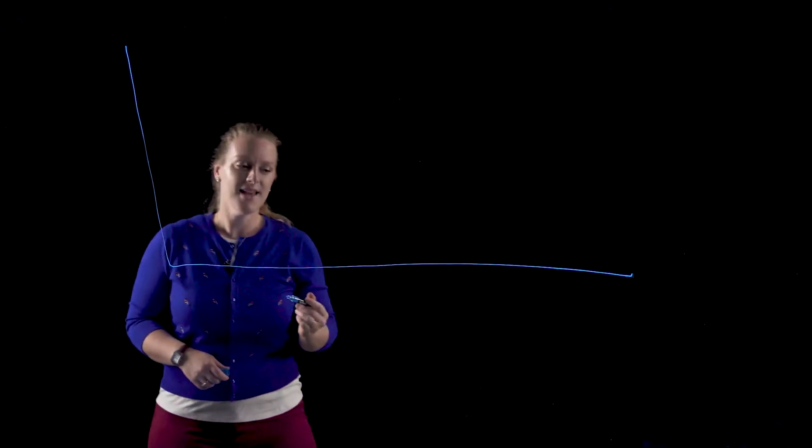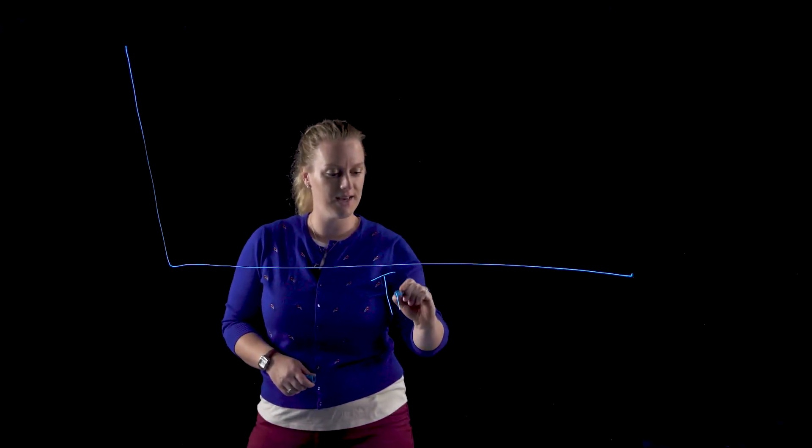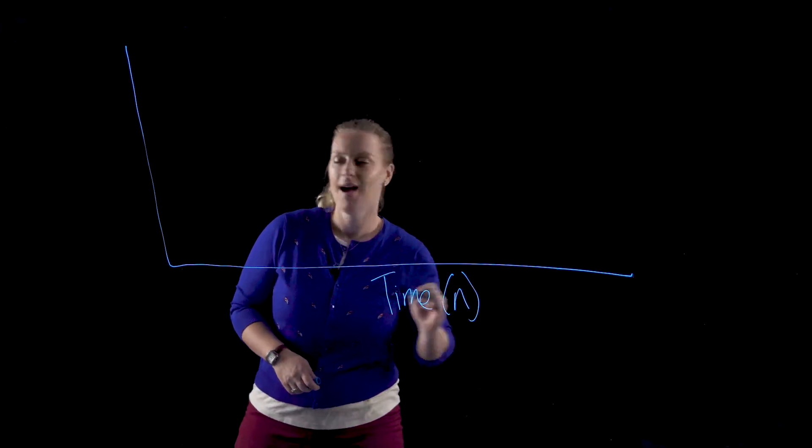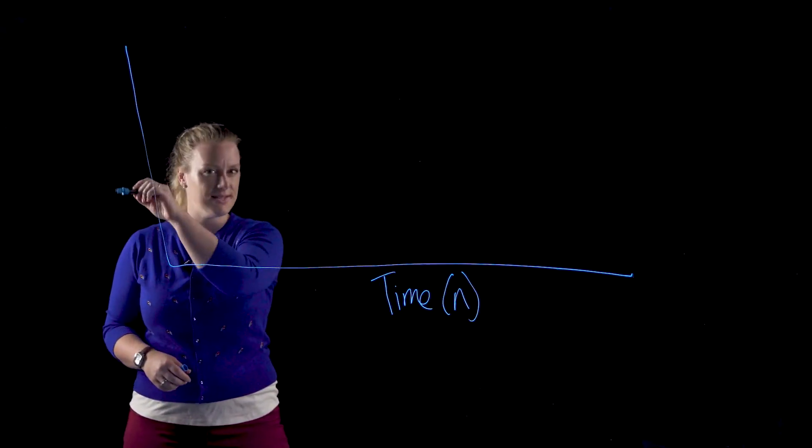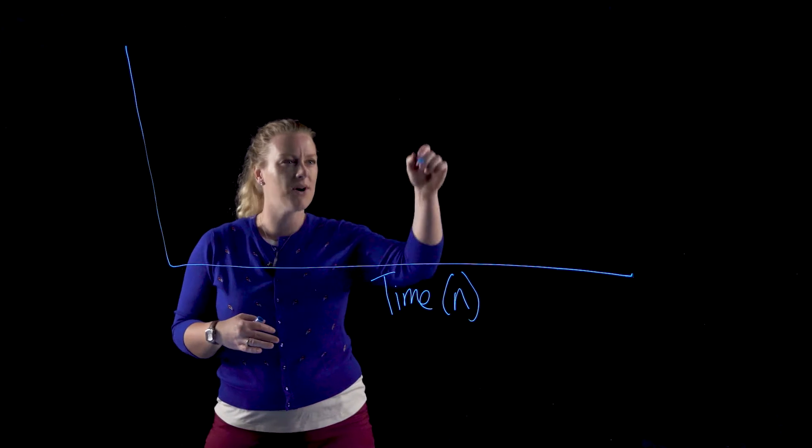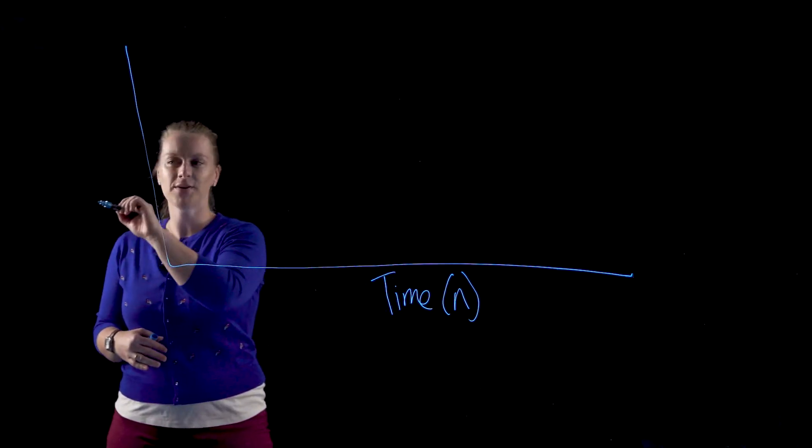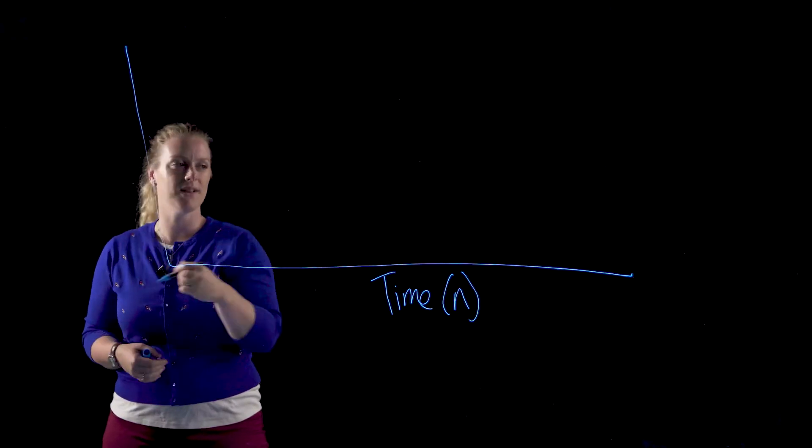I'm going to begin by drawing an X and Y axis. We're going to put time down here on the bottom on the X axis, and then we're going to talk about a VEC. So we're going to talk about an implementation of a mining project and a valued ecosystem component, or your VEC, of water quality.